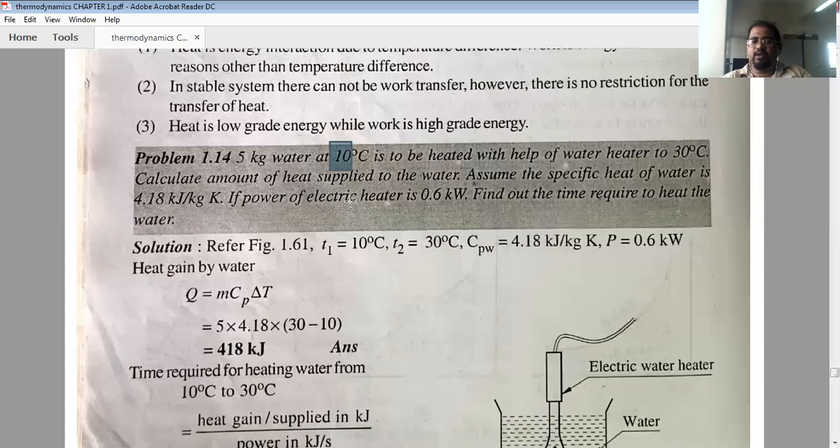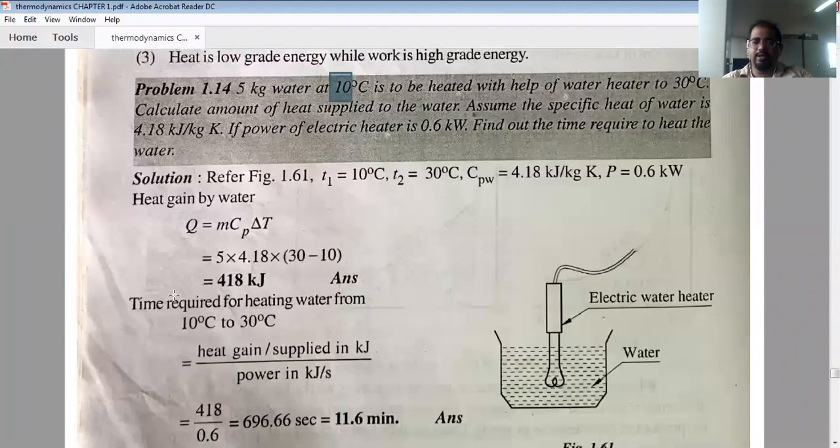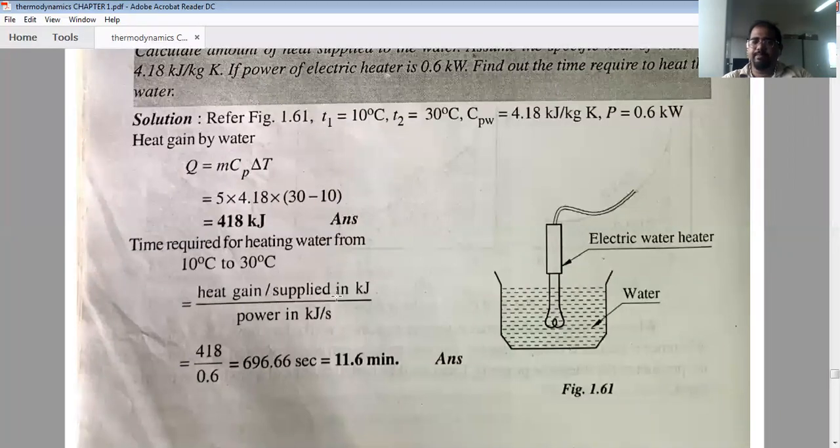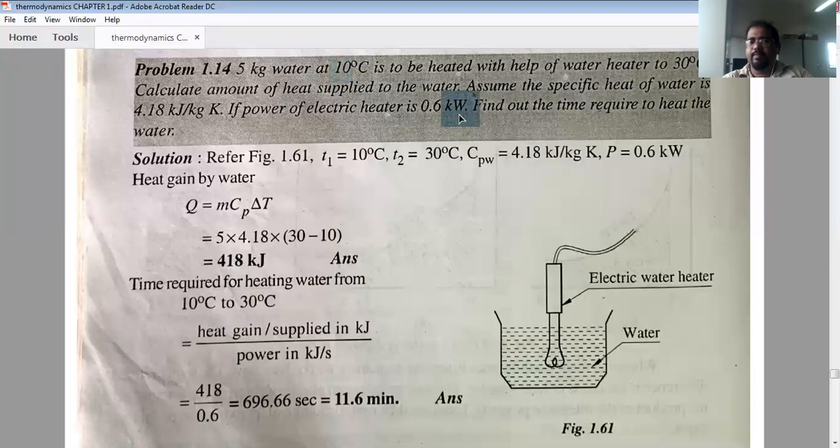If power of electric heater is 0.6 kW, then find out the time required to heat the water. So how much time it takes to heat the water? So you have to remember this formula: heat gain per supply in kilojoule upon power in kilojoule per second. So what you remember here is this.